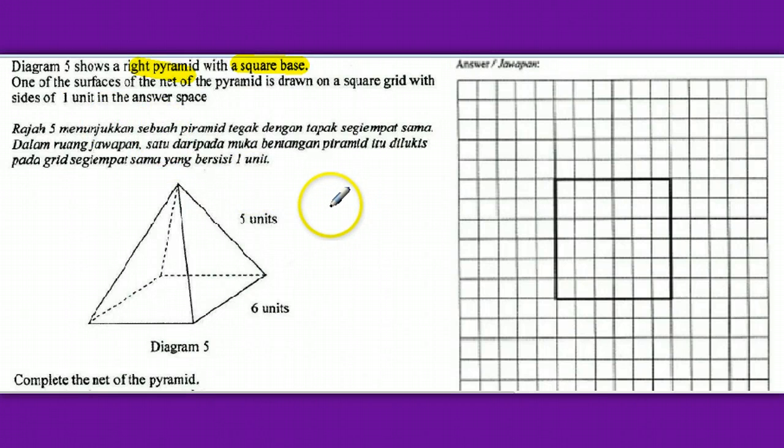Now briefly, the net looks like this. Alright, this is a square here and it is six times by six. And for the triangle, here is five. Here is five as well. Okay, the square is already drawn here. We need to draw the isosceles triangle.